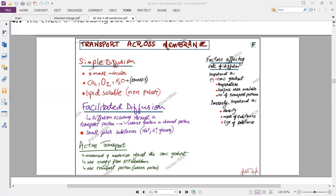Factors that affect the rate of diffusion: rate of diffusion is proportional to the concentration gradient, temperature, surface area available, number of transport proteins, and will be inversely proportional to the density, the mass of substance, and the size of the substance as well.